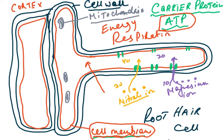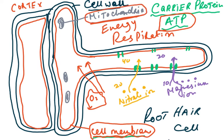In cars, fuel is burnt by combustion to release energy. In living cells, the equivalent process is respiration — combustion and respiration are comparable, but respiration occurs in living cells, specifically in the mitochondria. If respiration is aerobic, oxygen is needed and enters through air spaces in the soil. Aerobic respiration takes place in the mitochondria, releasing energy so that ions can be taken up by active transport.